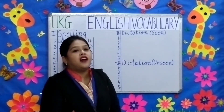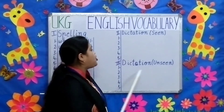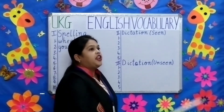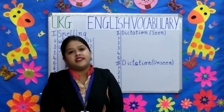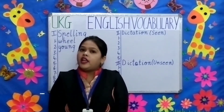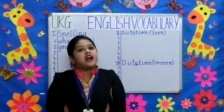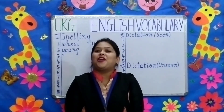The third question is dictation unseen. Children, these 5 sentences will be unknown. It will be asked from anywhere.